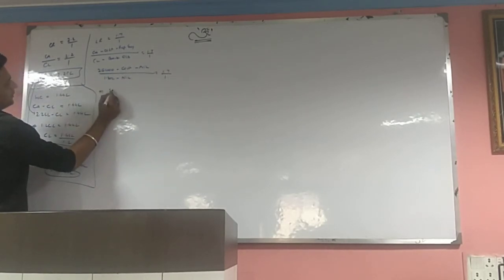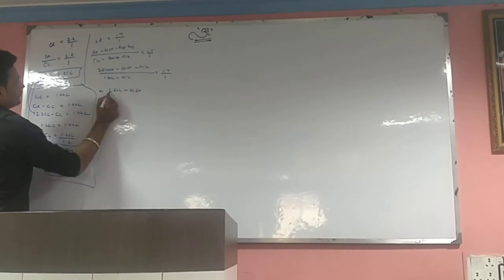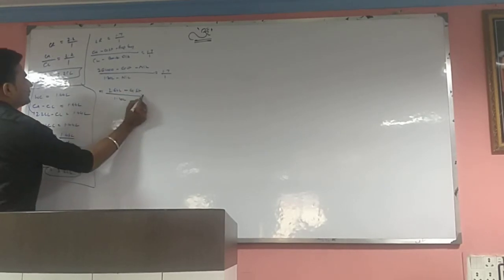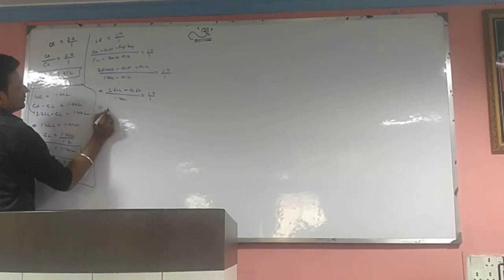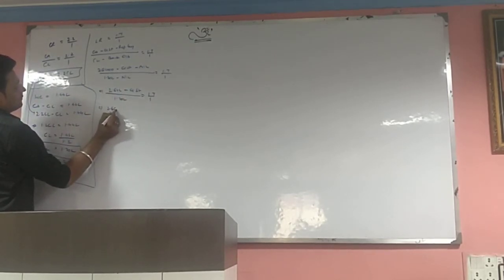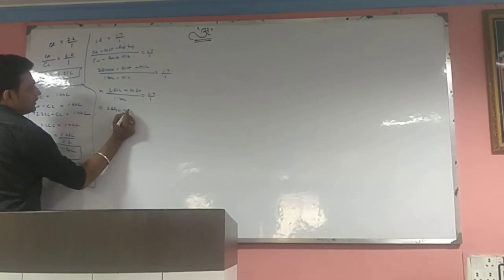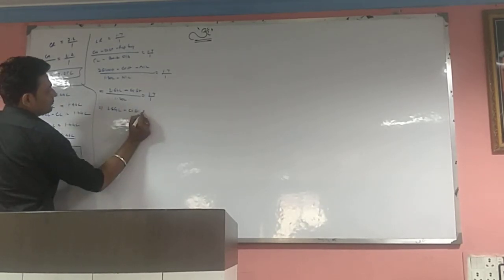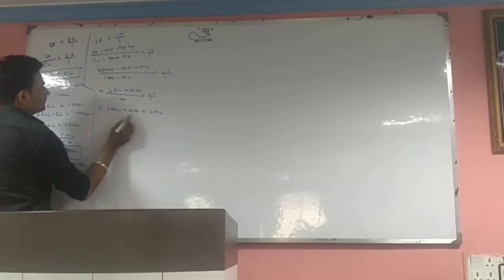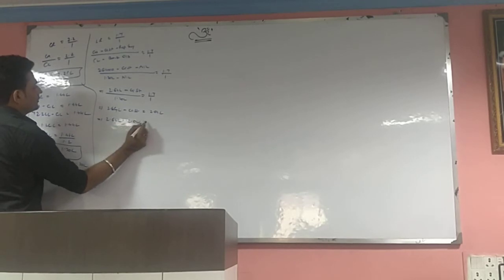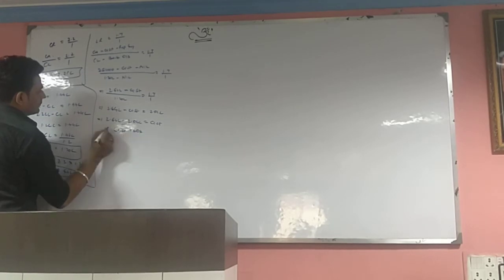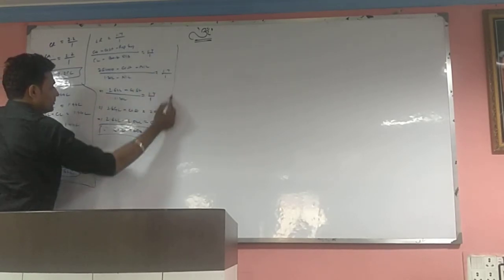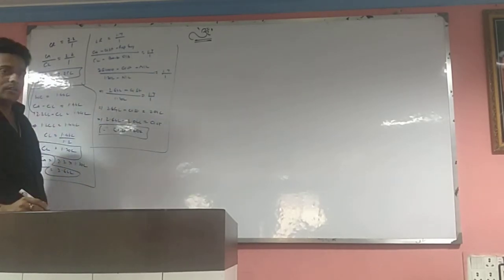So 2,64,000 minus closing stock divided by 1,20,000 equals 1.7 by 1. Cross-multiplying, 2,64,000 minus closing stock equals 2,04,000. Therefore closing stock equals 60,000. Stock is settled.